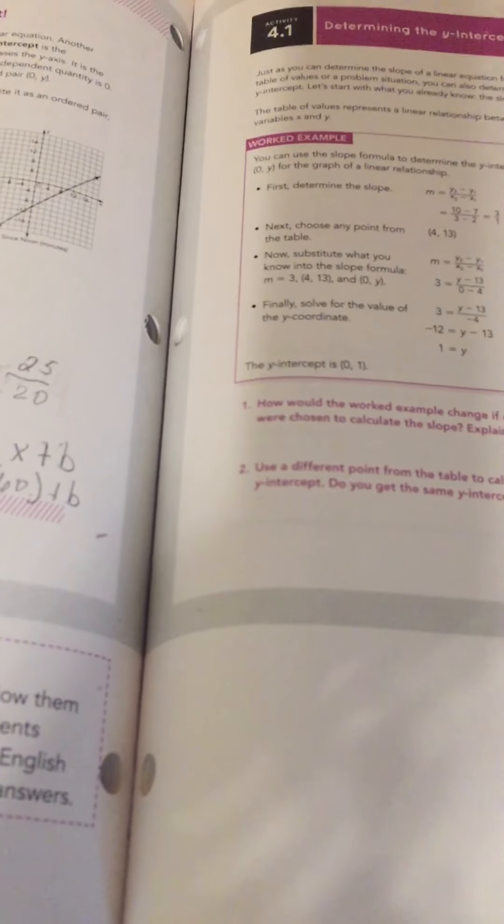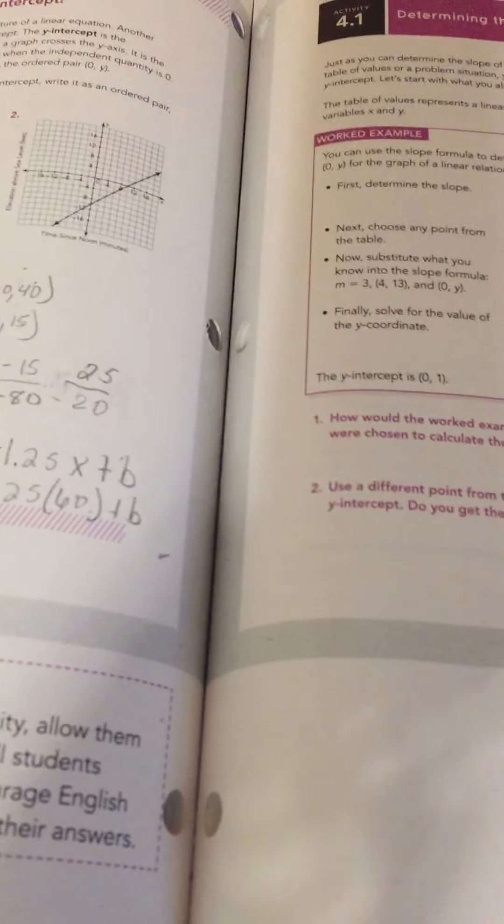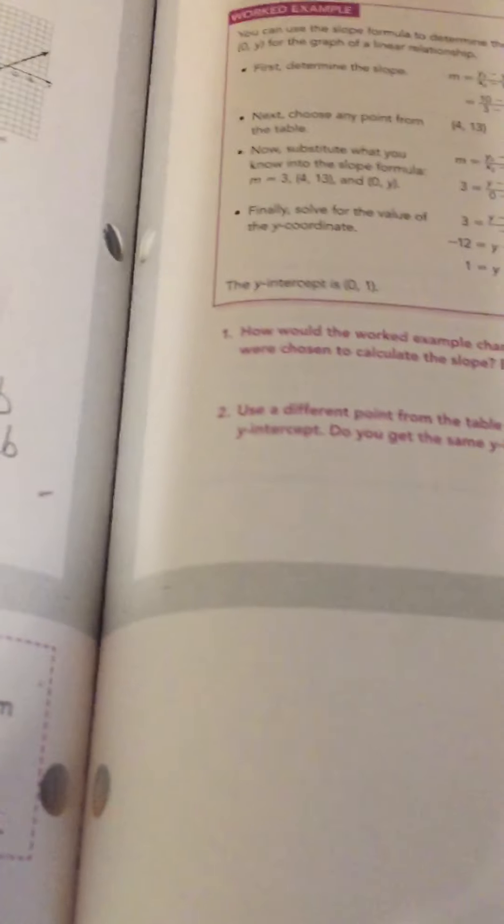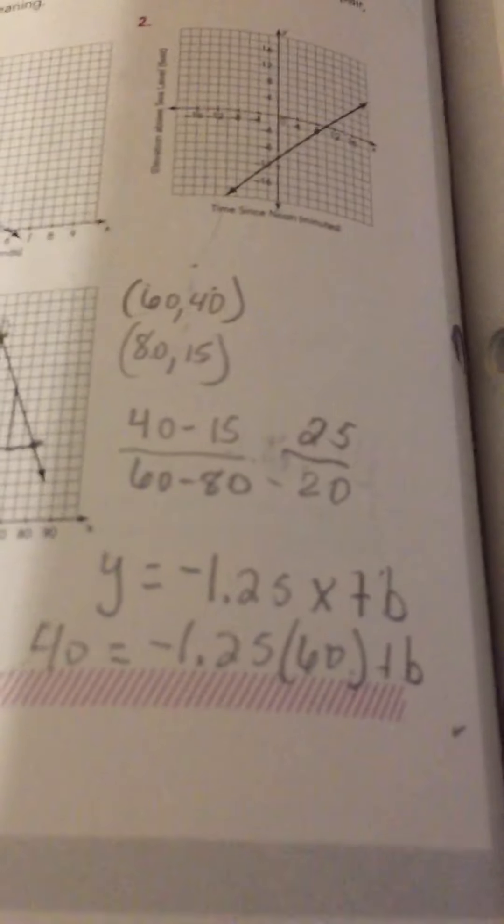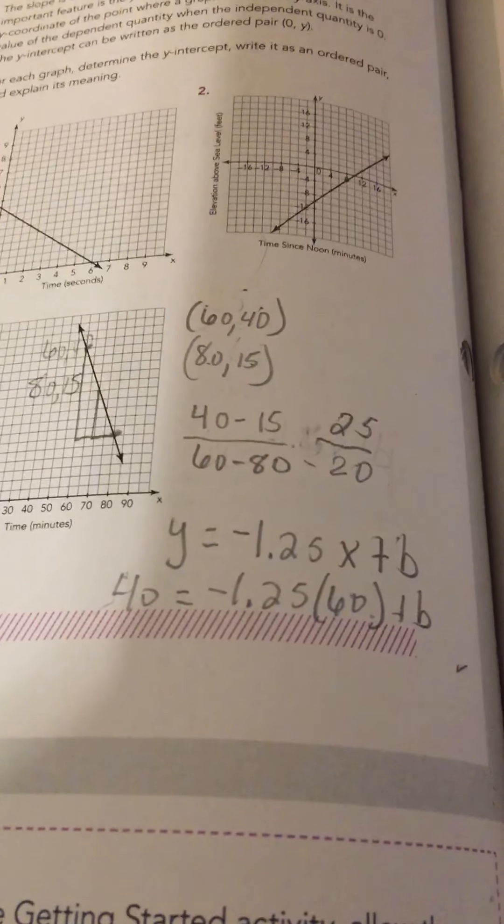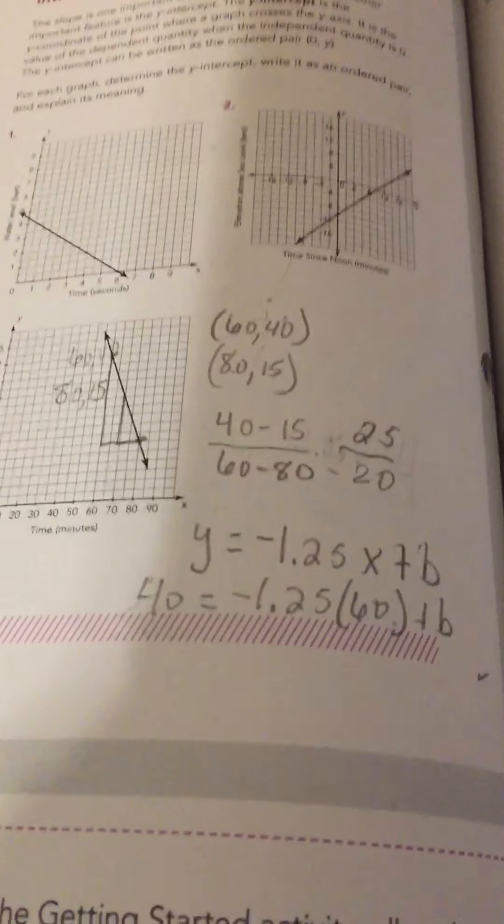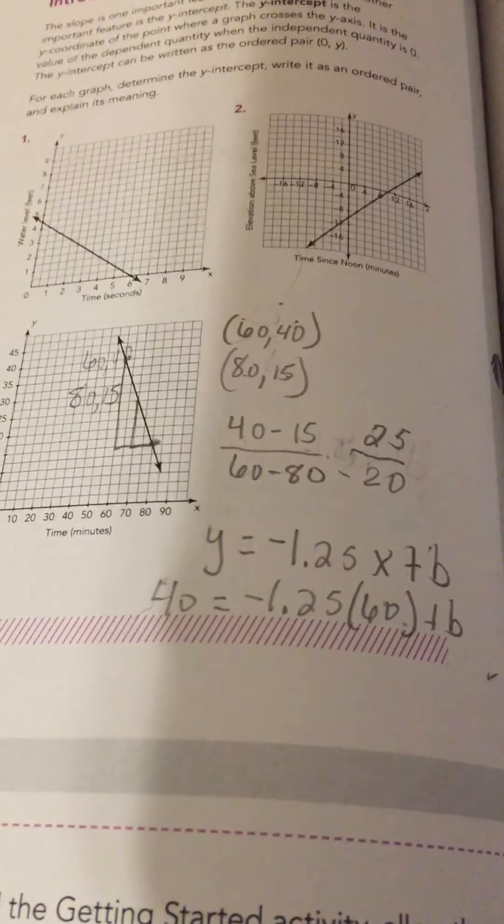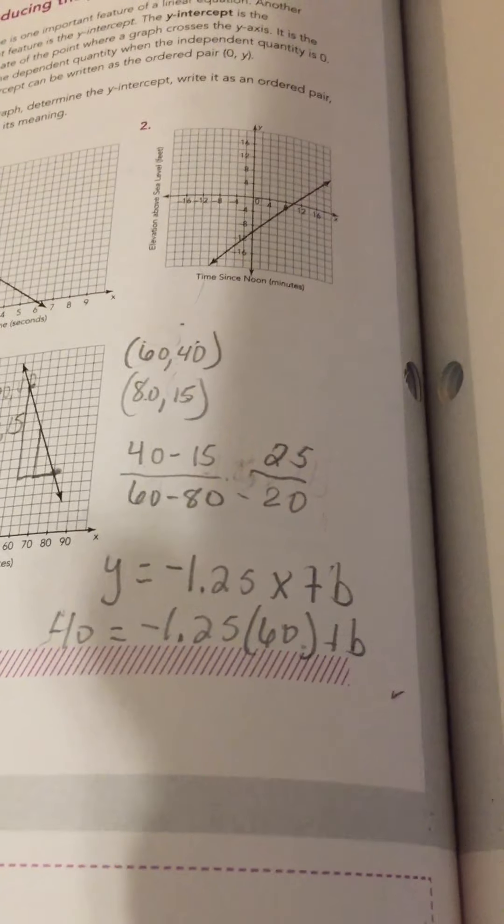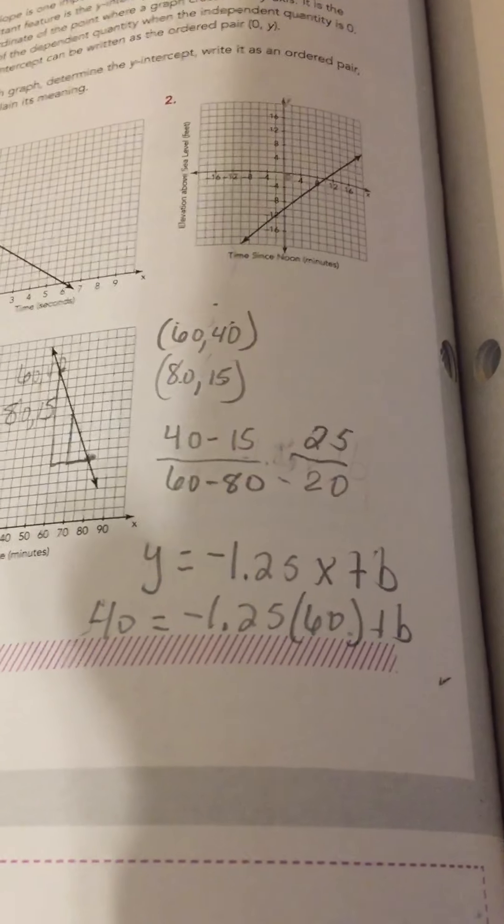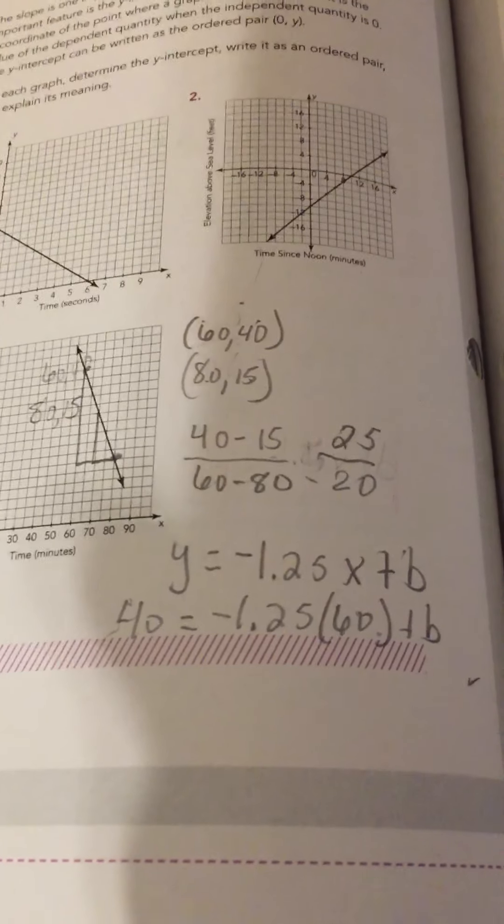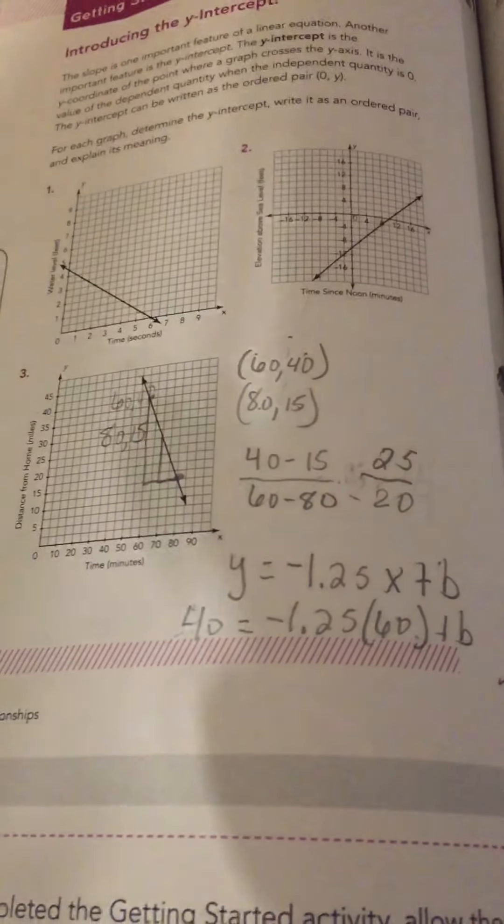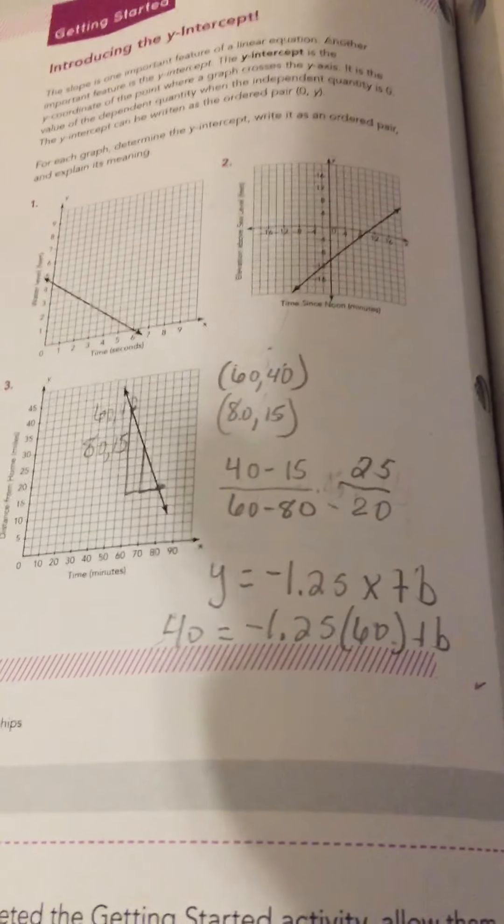All right, so negative 1.25 times 60 is negative 75. So, then what would I have to add to negative 75 to get to 40? Well, I definitely have to add 75 just to get to 0 and then another 40. So, that's 115. So, then I would have to have a positive 115 here for my b in order for this to be a true math statement. So, then that means my y-intercept is going to be 115.